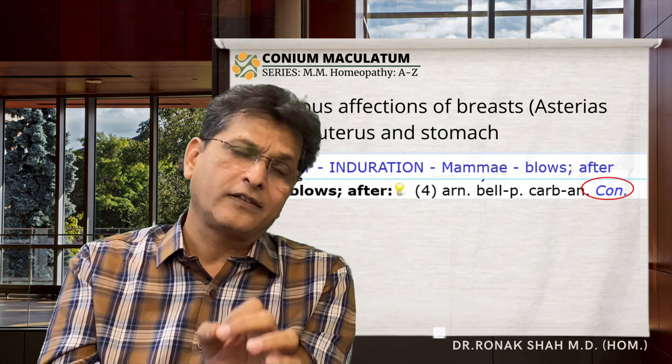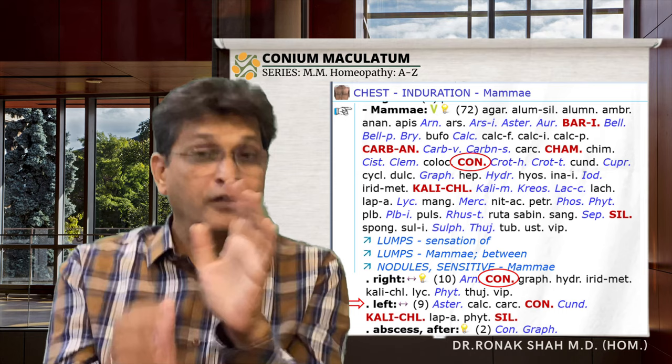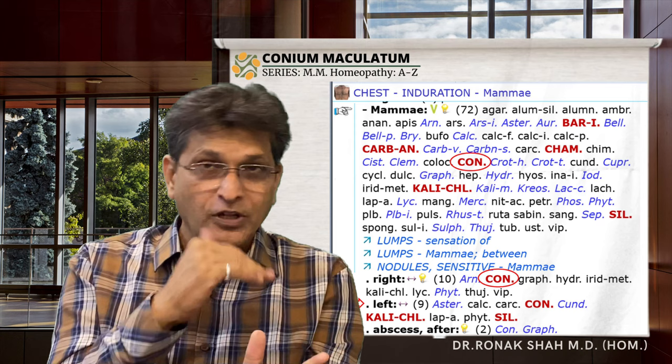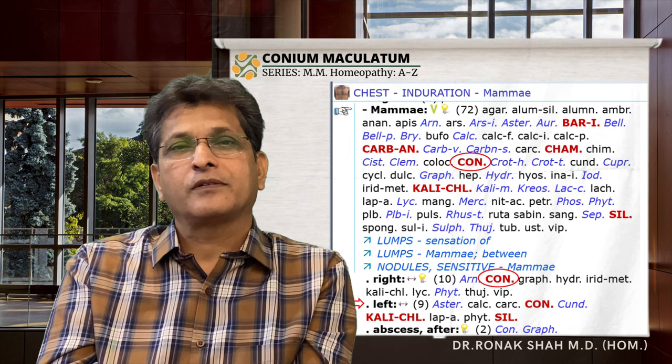Especially if there is stony hardness and heavy feeling in the mammary gland. Here you can compare with Silicea — both have hardness of the mammary gland; Conium on the right, Silicea on the left. Acute lancinating pains are also given under Asterias Rubens. For induration of the mammary gland we have the rubric, and right and left are both covered by Conium.